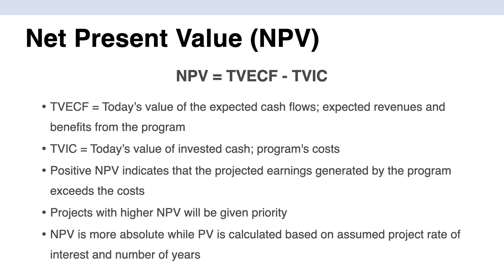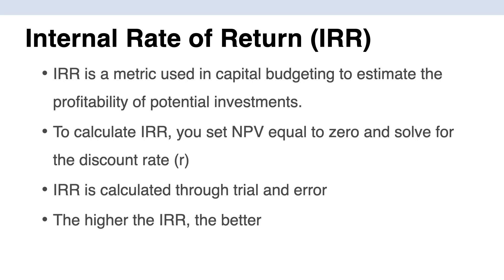From present value we can calculate Net Present Value. NPV is today's value of expected cash flows — all expected revenues — minus today's value of invested cash, which is all costs related to your program. We project how much money we'll earn in the future versus when costs will be incurred, and discount everything into today's dollars. If NPV is positive, the program earns money; if negative, it loses money. We prioritize projects with higher NPV. NPV is more absolute, while PV is calculated based on an assumed interest rate and number of projection years.